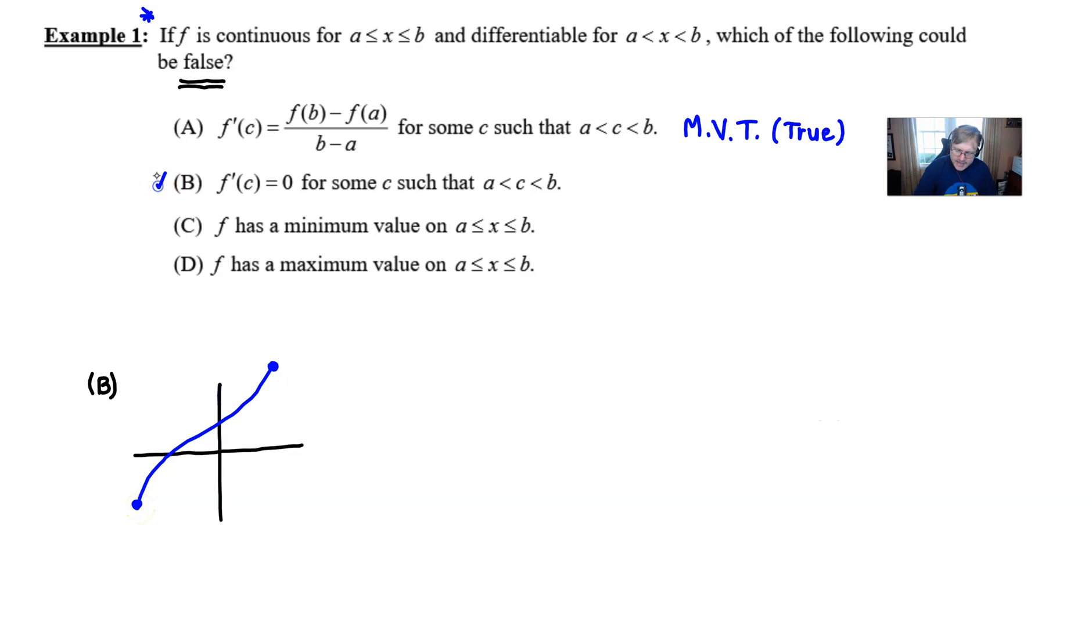Now if I move on to c and d the connections that I hope we make here is the fact that this relates to the theorem that we just talked about. This is the extreme value theorem and of course this always has to be true and the stipulation was that you had a function that was continuous on a closed interval was its only stipulation. And so we can even see from my picture that I drew for b that we certainly have a maximum value and we certainly have a minimum value and so we are going to go with b.